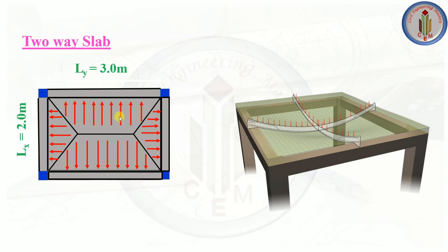In a two-way slab, the condition is different. When the load is applied, the load transfer mechanism is entirely different from the one-way slab. The load path divides into trapezoidal areas and triangular areas. In a two-way slab, the load transfers to all the supporting beams — the triangular area load goes to one beam and the trapezoidal area load goes to another. When the load is applied, the two-way slab bends in the shorter direction as well as in the longer direction.